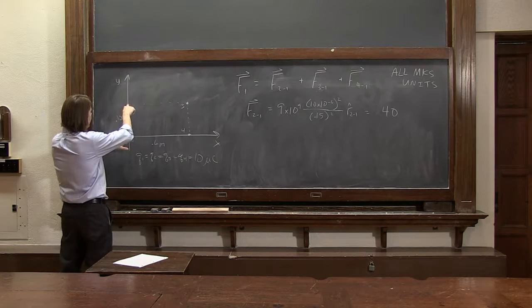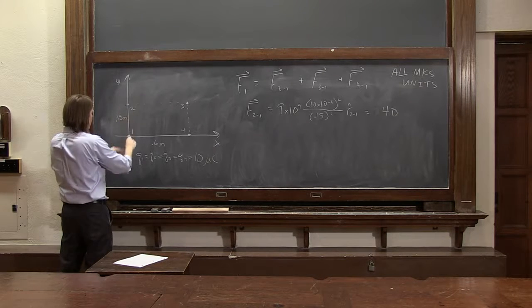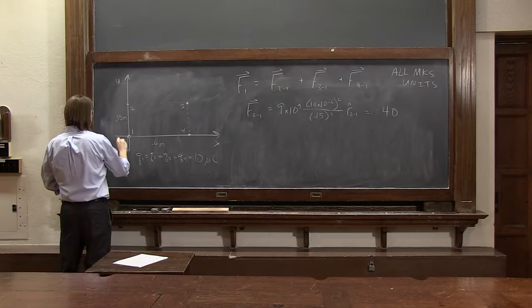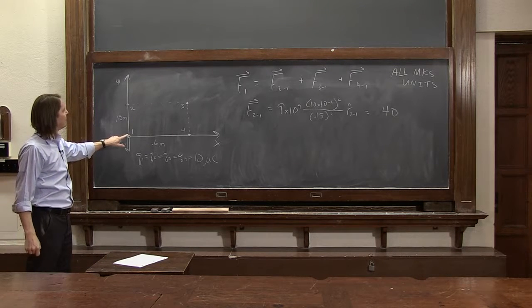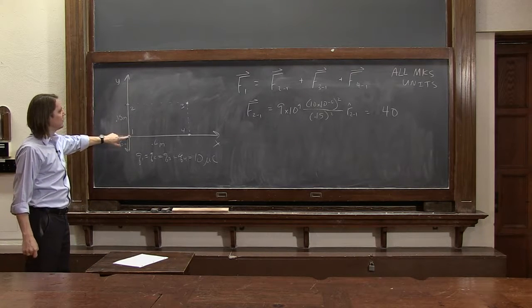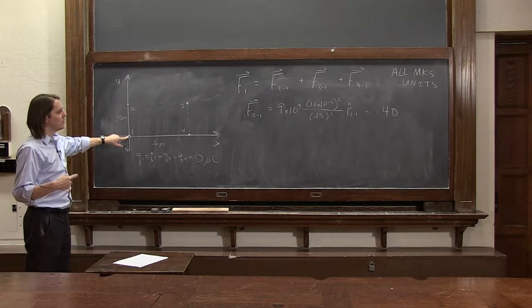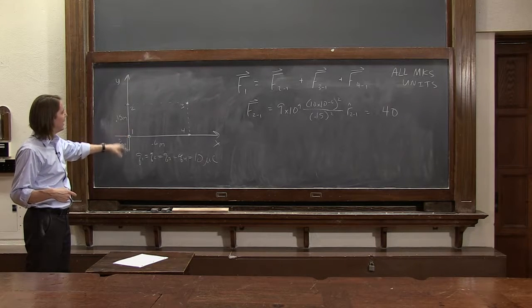2 to 1, so it's a unit vector along this axis. It points from 2 to 1. There's R hat 2,1. It points down. If it points down on the y-axis, then the way we would write this in Cartesian coordinates is the unit vector for the y-axis is j hat.